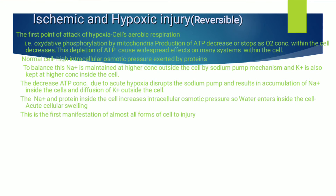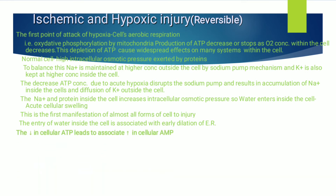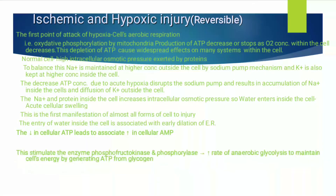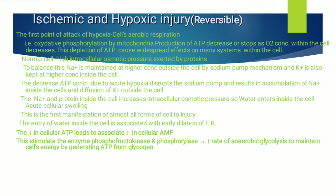This cellular swelling is the first manifestation of almost all forms of cell injury. The entry of water inside the cell is associated with early dilation of the endoplasmic reticulum. Decreased cellular ATP leads to increased cellular AMP — because ATP converts to AMP by losing a phosphate (ATP = AMP + phosphate; adenosine triphosphate becomes adenosine monophosphate). This stimulates the enzymes phosphofructokinase and phosphorylase, increasing the rate of anaerobic glycolysis.